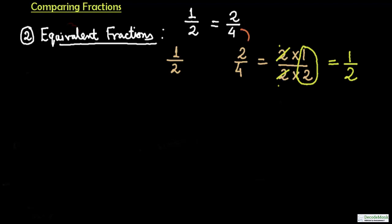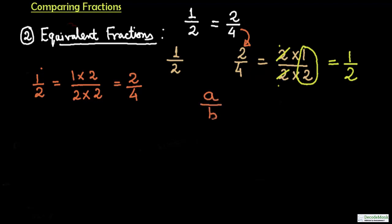We arrived at this by starting from 2 by 4. We could also arrive at the same conclusion starting from 1 by 2: if you multiply both the numerator and denominator by 2, you arrive at 2 by 4. Please remember that for any fraction a upon b, if both numerator and denominator are multiplied by the same number x, the result is equal to the original fraction.